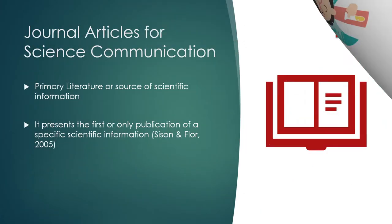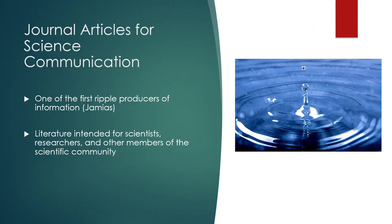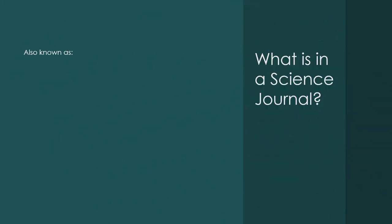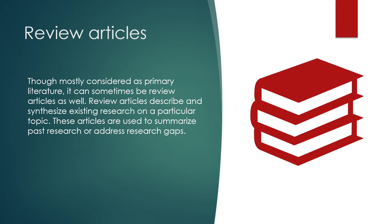In science communication, journal articles are classified as primary literature or source of scientific information. It is one of the first producers of information, as it is primarily intended for use by scientists, researchers, and other members of the scientific or scholarly community. Most journal articles go through the peer review process. Hence, a journal article is sometimes referred to as a scientific article, a peer-reviewed article, or a scholarly research article. It is primary literature but it can also contain review articles.